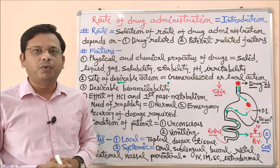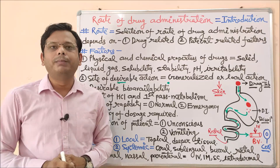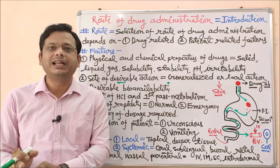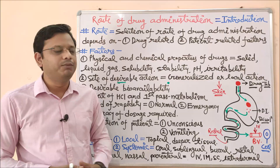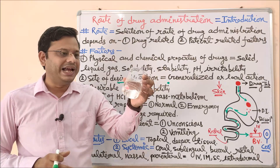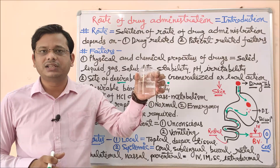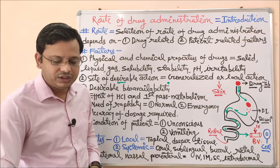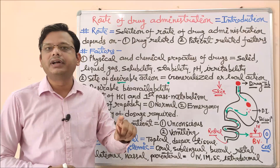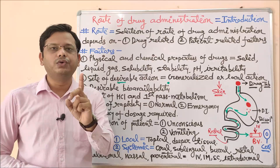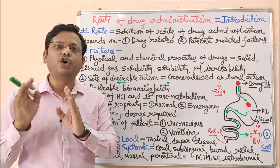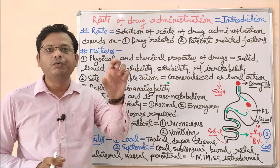Bioavailability is one of the most important parameters for selecting a proper route. A drug taken by oral route must undergo disintegration, dissolution, and then absorption before producing an effect — this takes time and never yields 100% bioavailability. There is only one route that gives 100% bioavailability: the intravenous route. This is why IV is the reference standard for bioavailability, and it is a parameter we will study in much greater detail later.